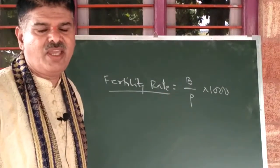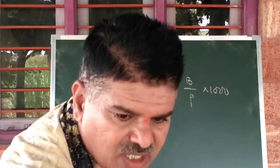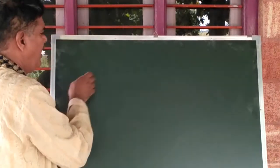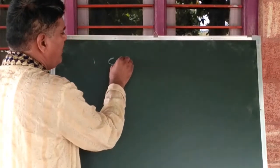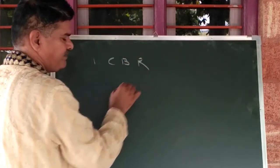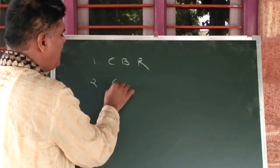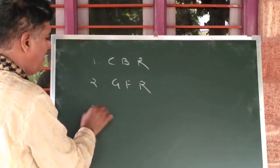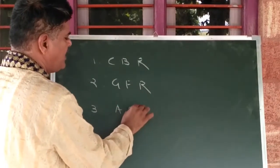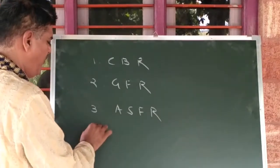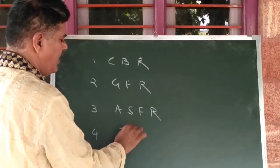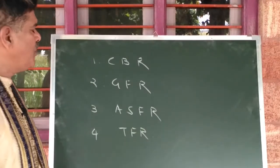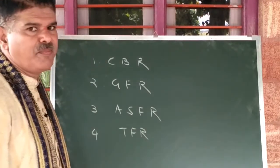There are various ways of looking at fertility rate. One is the crude birth rate, another one is the general fertility rate, the third one is the age-specific fertility rate, and finally the fourth one is the total fertility rate. We will now discuss these birth rates.